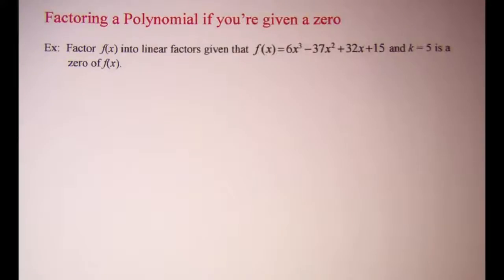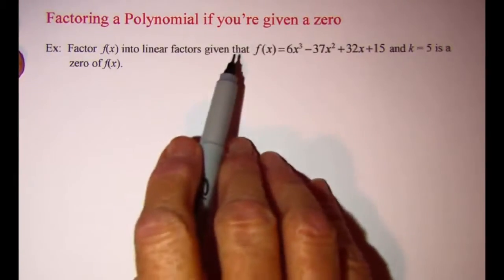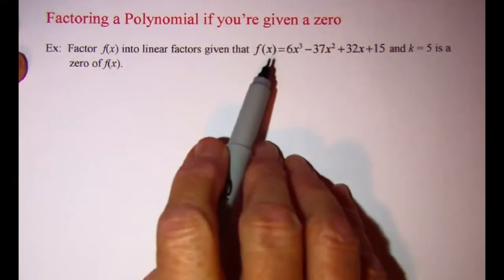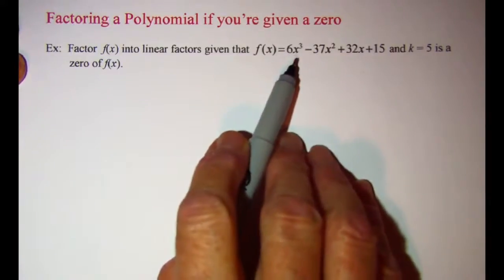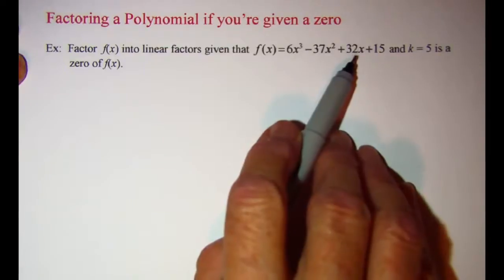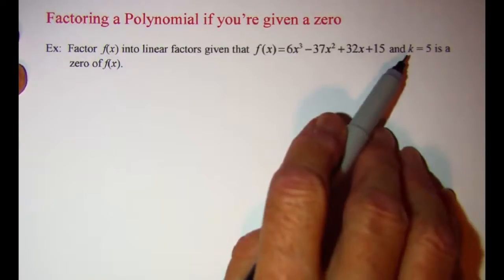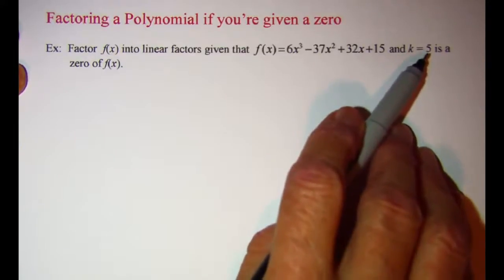In this video we'll be factoring a polynomial function into linear factors given one of the zeros of the function. The example we're doing asks us to factor f(x) into linear factors given f(x) equals 6x cubed minus 37x squared plus 32x plus 15, and k equals 5 is a zero.